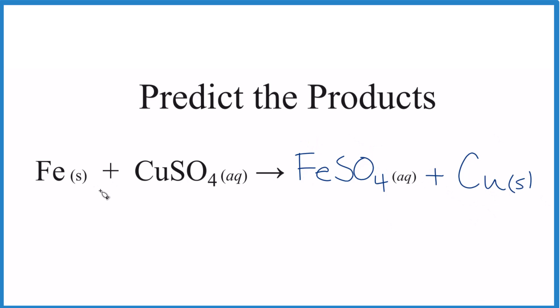So these are the products for the reaction of Fe plus CuSO4. If you need help figuring out the charges on ions, there's a link at the end of this video.